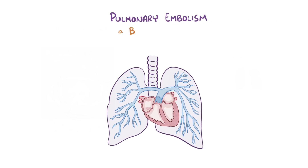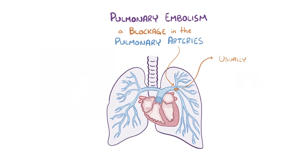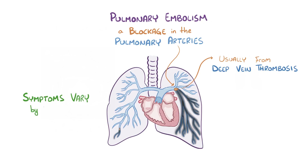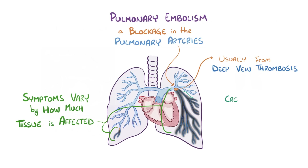As a quick recap, a pulmonary embolism is a blockage in the pulmonary arteries which deliver blood to the lungs to pick up oxygen. Typically, a pulmonary embolism is a thromboembolism which happens when a blood clot formed from a deep vein thrombosis lodges itself in the pulmonary arteries. Symptoms vary by the amount of downstream lung tissue denied blood, which causes a ventilation-perfusion mismatch, so immediate treatment is important.